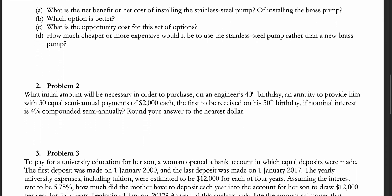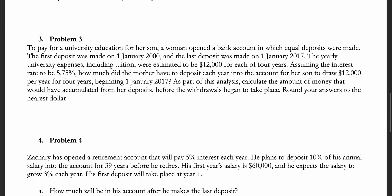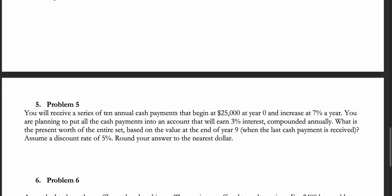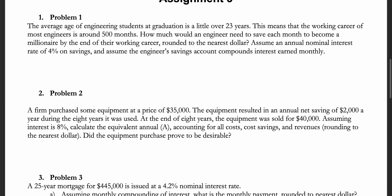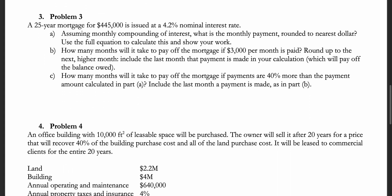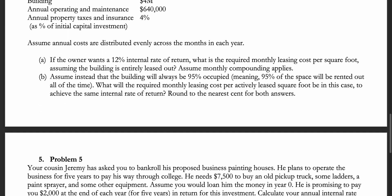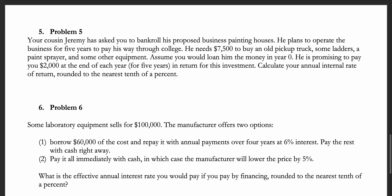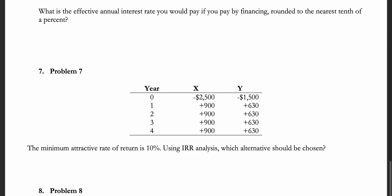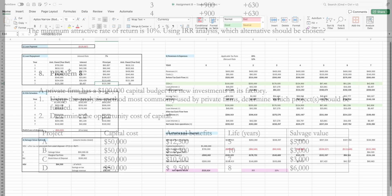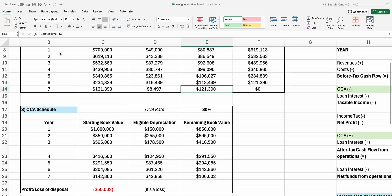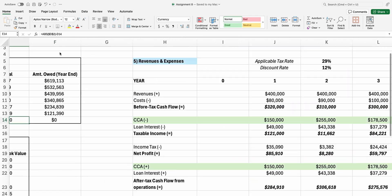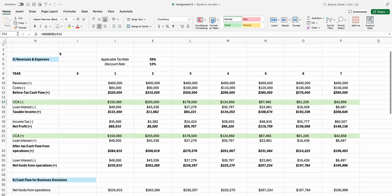In terms of workload, there are 10 assignments you will need to complete for this course, with around 2-8 questions per assignment. During the summer session, these were due roughly every 4-5 days, and most likely during the winter session they'll be due every week. These assignments test your understanding of the concepts taught in lectures and are heavily based on textbook problems. You can complete them however you'd like, as long as you submit a PDF with your final answers. Some questions may require an Excel spreadsheet, which you'll submit along with your PDF.